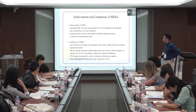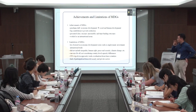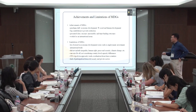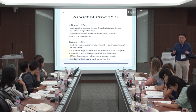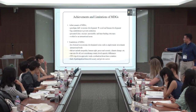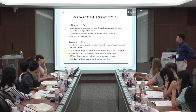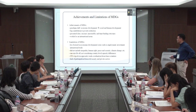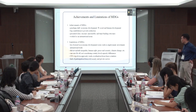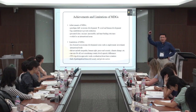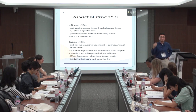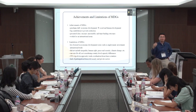MDG limitations included neglecting traditional economic issues like employment, investment, and international trade, and omitting inequality, human rights, peace, security, and climate change. It was a one-size-fits-all approach that didn't account for country-level capacity differences. It was also a top-down approach — the UN announced the MDGs and countries were expected to follow — with limited participation from civil society or the private sector.